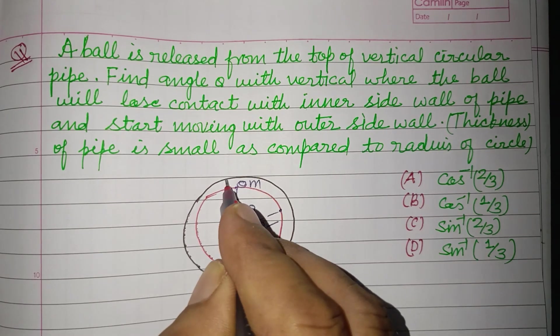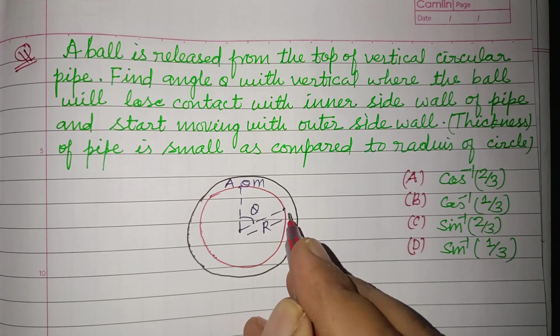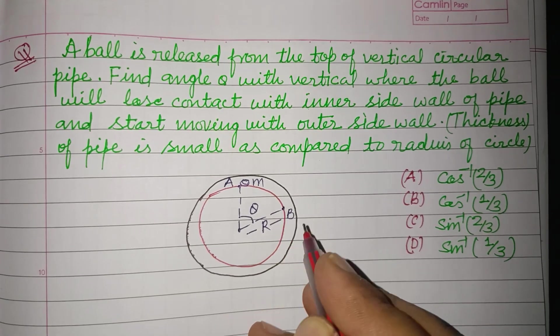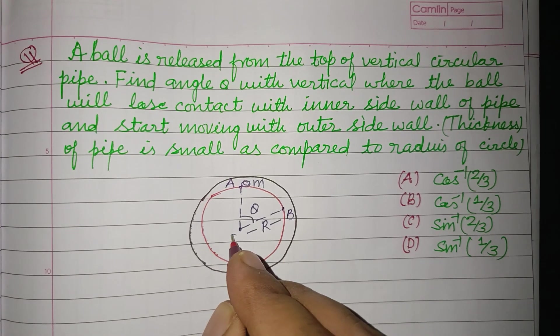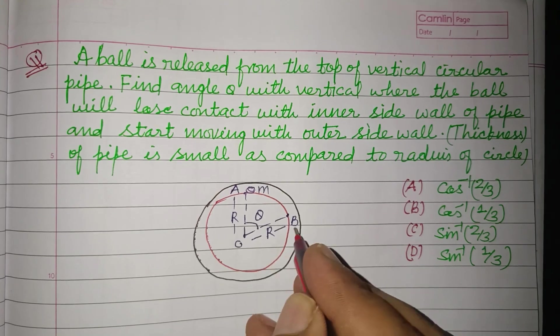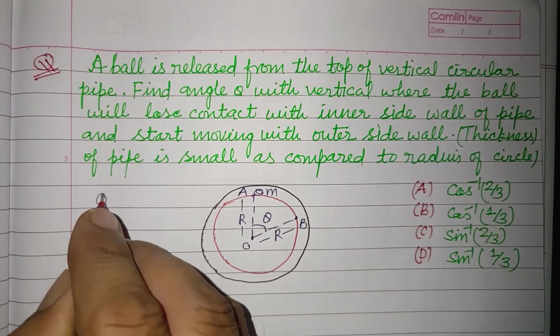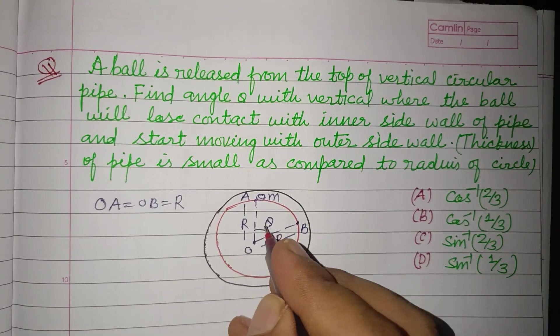So, at point A the ball is at the top. At point B let it lose contact with the inner circle. This is the center of the circle, with radius R. Here OA equal to OB, that is R.